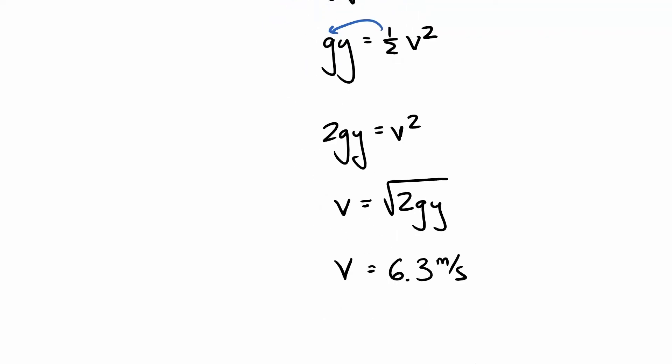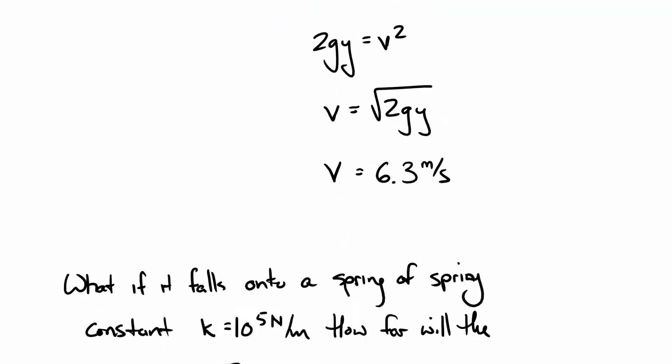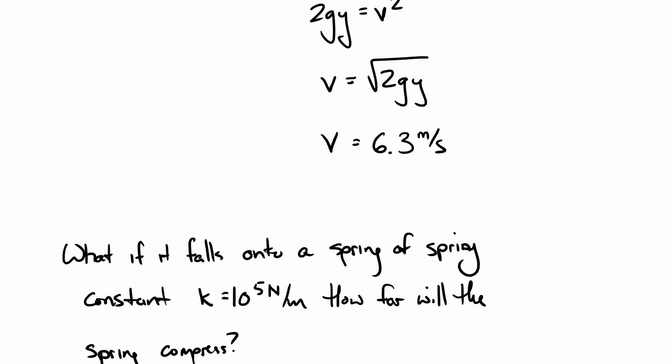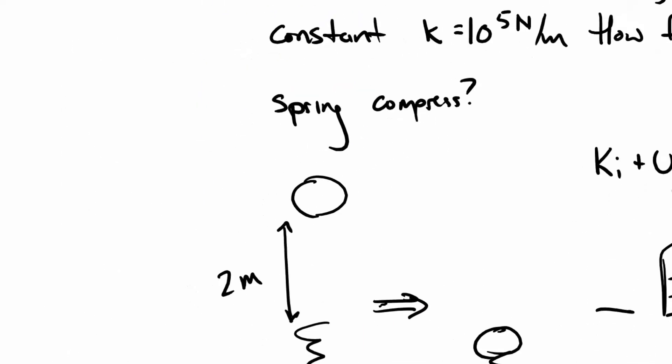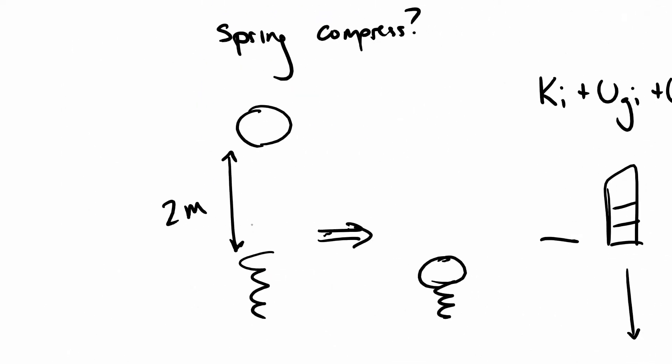Now, what if, to make things interesting, it falls onto a spring of spring constant k equals 10 to the fifth newtons per meter. So remember, scientific notation, 10 to the fifth is a one with five zeros. So how far will the spring compress? All right, so situation I got. Ball falls onto spring, spring squishes.